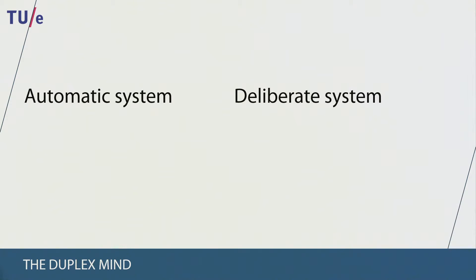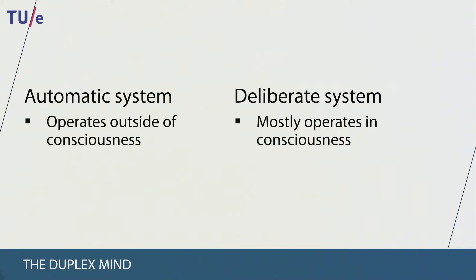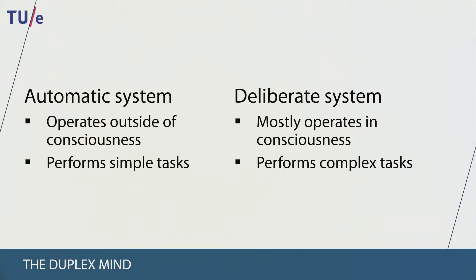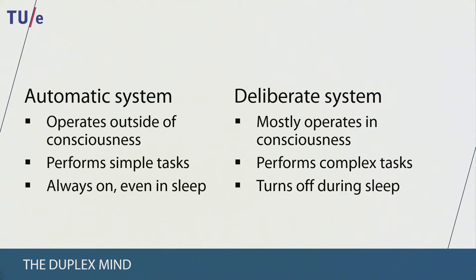The properties of these two systems can be summarized as follows. The automatic system works outside of our conscious awareness, whereas the deliberate system mostly operates in consciousness. This means that automatic processes occur without us becoming aware of them, while we have to put some thinking into processes of the deliberate system. Because of its automaticity, the automatic system is mostly used for performing simple tasks, while the deliberate system is used for more complex or cognitively demanding tasks. Finally, the automatic system is always on and even functions while we are asleep, while the deliberate system turns off when we fall asleep.